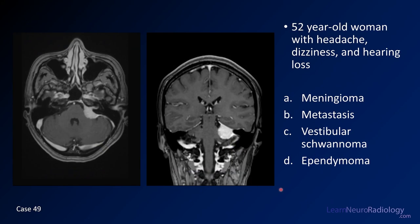Case number 49 is a 52-year-old woman with headache, dizziness, and hearing loss. Two post-contrast images — axial and coronal. Your choices are meningioma, metastatic disease, vestibular schwannoma, or ependymoma.